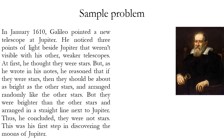So let's read this passage and see if we can identify the logical structure of the argument: 'In January 1610, Galileo pointed a new telescope at Jupiter. He noticed three points of light beside Jupiter that weren't visible with his other weaker telescopes. At first, he thought they were stars. But as he wrote in his notes, he reasoned that if they were stars, then they should be about as bright as the other stars and arranged randomly like the other stars. But they were brighter than the other stars and arranged in a straight line next to Jupiter. Thus, he concluded they were not stars.'